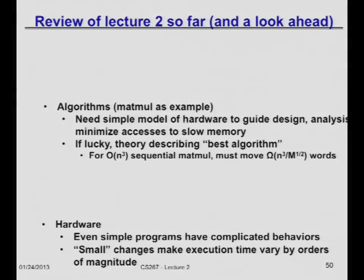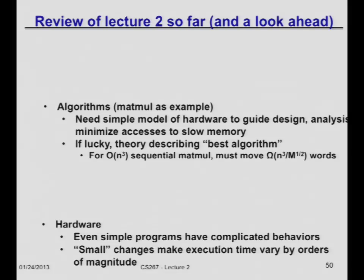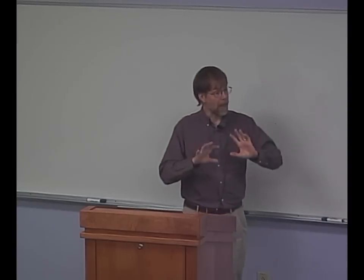We showed how to do that, in particular for matrix multiply — a blocked algorithm that went very fast. And sometimes, if we're lucky, we even have a theorem that says we can do as well as possible. In the special case of that matrix multiply algorithm, there's a theorem going back to 1981: if your n-by-n matrix does not fit in your cache of size M, then the number of words you have to move back and forth between fast and slow memory is at least n³ divided by the square root of M. That algorithm achieves that bound — it's optimal.